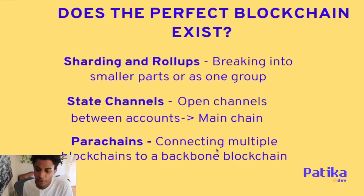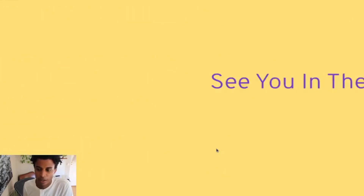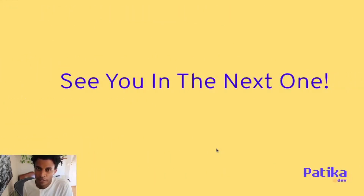There are also parachains, which connect multiple blockchains to a backbone or main blockchain. Transactions are done on the parachain network using those resources, and after settling on the parachain they are passed to the main blockchain to be committed to a block — spreading resources out for more scalable and speedy transactions. That's how we balance security, scalability, and decentralization. Next, we'll look at how we build on the blockchain.